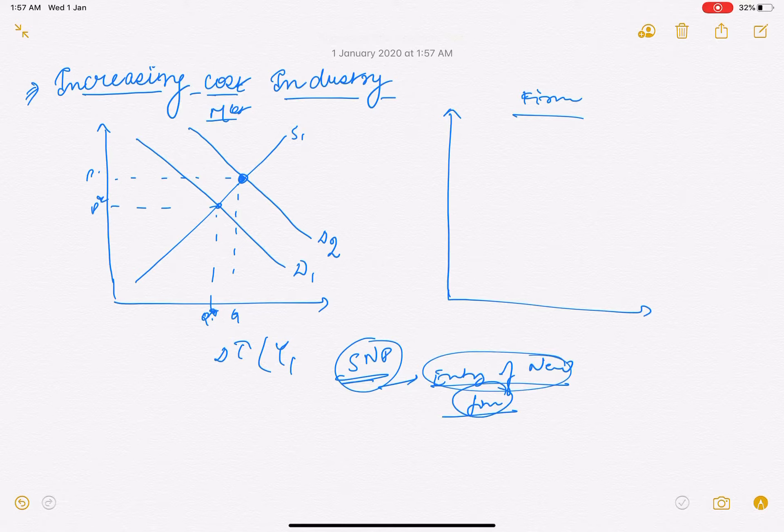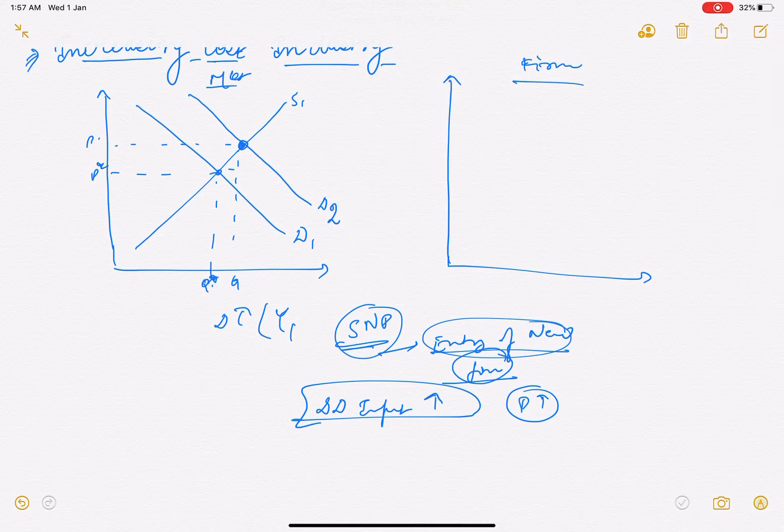Toh jab profit itna zyada hota hai, new firms enter karni lag jaati hain. Toh demand curve bhi hamara - demand phir input ki, jab itni saari firms aa jayengi toh demand input ka badh jayega. Jab demand badh raha aur price bhi badh jaata hai un inputs ka, toh AC jo hai...